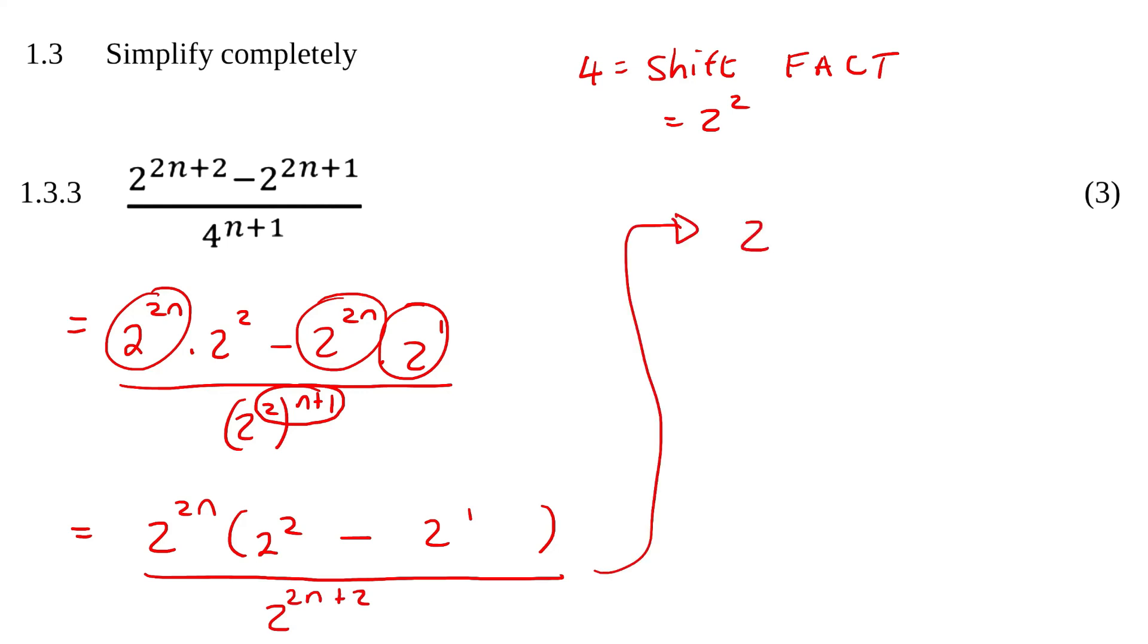So at the top, we're just going to be left with 2 to the power of 2n. The brackets will just become 4 minus 2, which is just 2. So that is all that we have at the top.